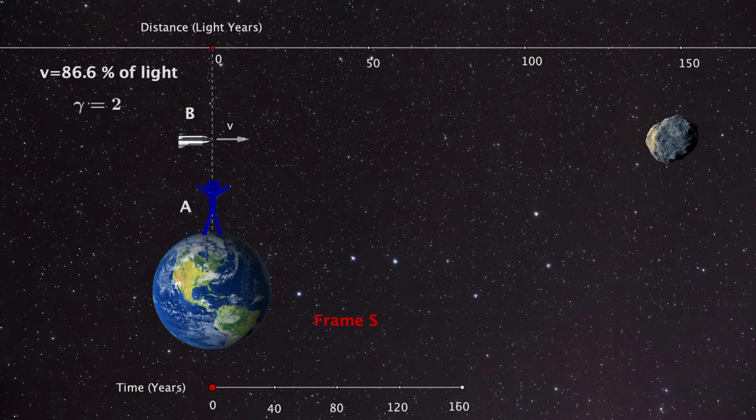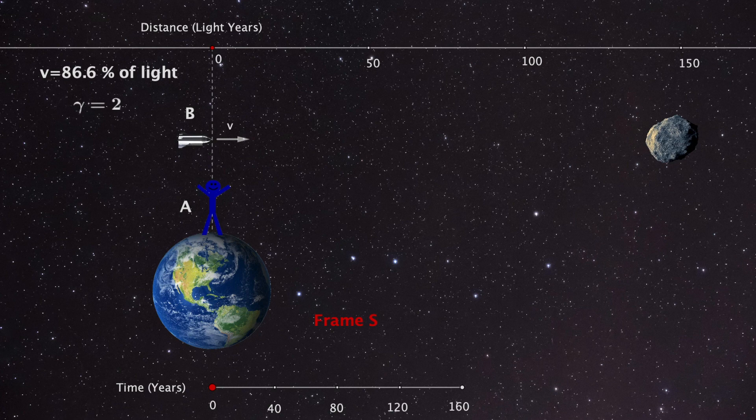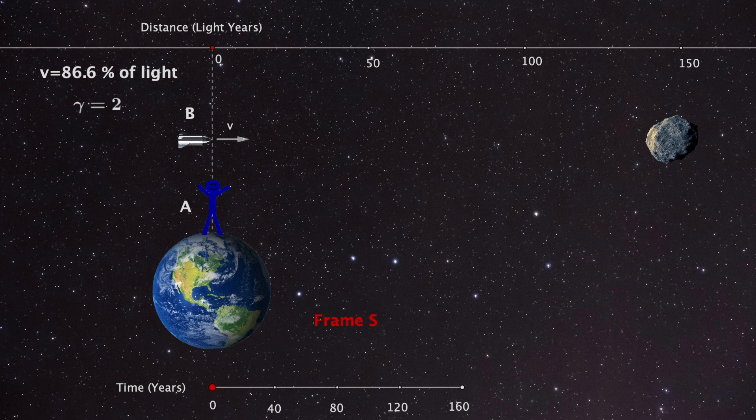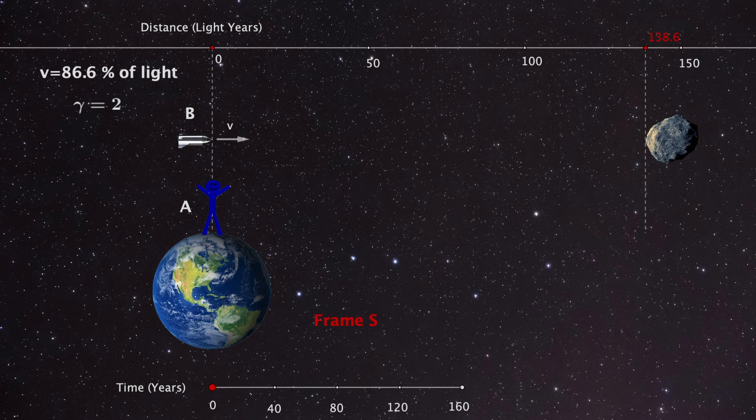From the perspective of Earth, his time is dilated by a factor of 2. This means that he will travel for 160 years at 86.6% of the speed of light. This gives us a distance to the asteroid of 138.6 light years.